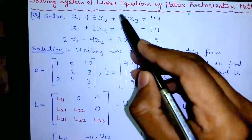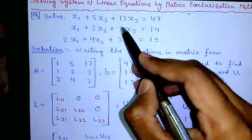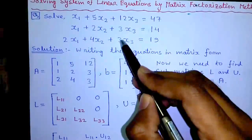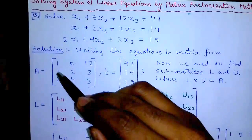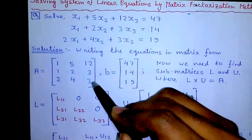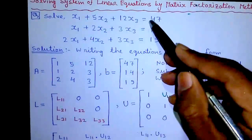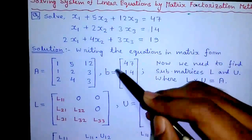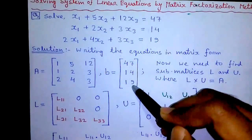Matrix A contains: row 1 is 1, 5, 12; row 2 is 1, 2, 3; row 3 is 2, 4, 3. By writing the right hand side values, you will get matrix B: 47, 14, and 19.